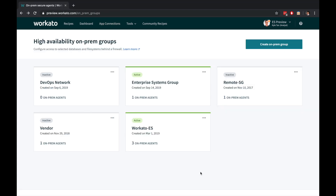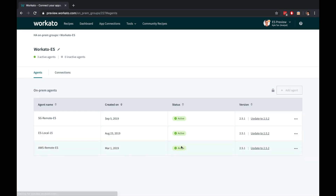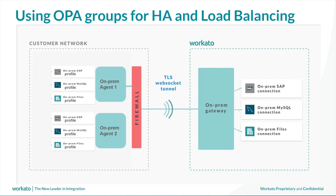While a single on-premise agent provides basic connectivity for your recipes, you can also add multiple on-premise agents into an on-premise group for load balancing, high availability, and zero downtime updates. On-premise groups are an easy way to configure multiple on-premise agents to work together, to route high-volume requests to balance load, and provide failover in the event that any single instance of an on-premise agent shuts down.